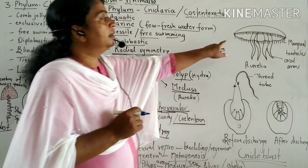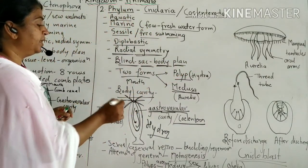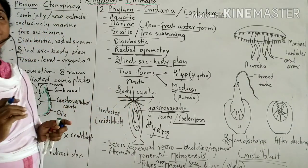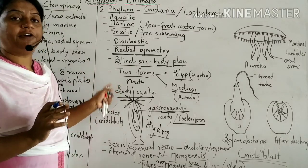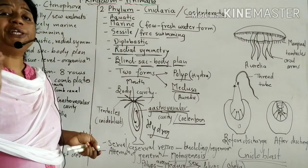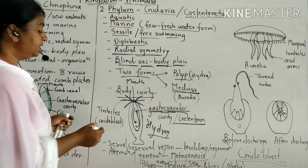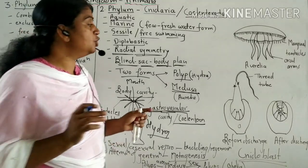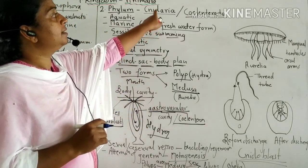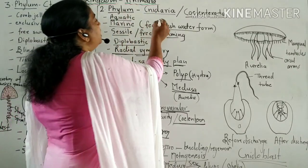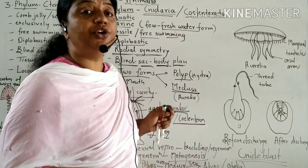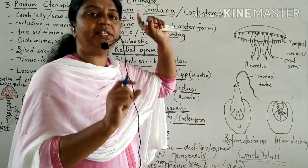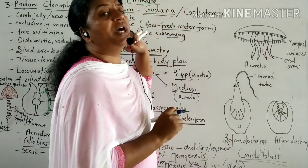Hydra and Aurelia show tentacles — Hydra has six tentacles. The special feature of this phylum is that the tentacles have a special type of cells called cnidoblasts. Because of the presence of cnidoblast cells, this phylum is called Cnidaria.